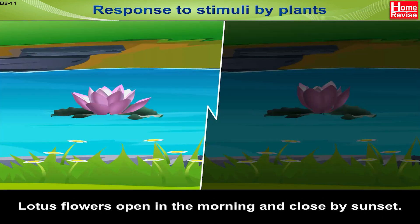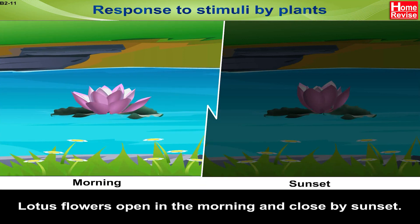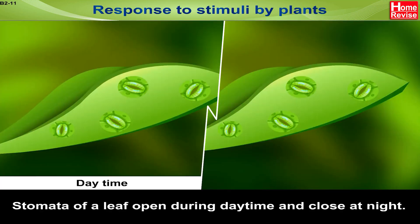Lotus flowers open in the morning and close by sunset. The stomata of a leaf open during daytime and close at night.